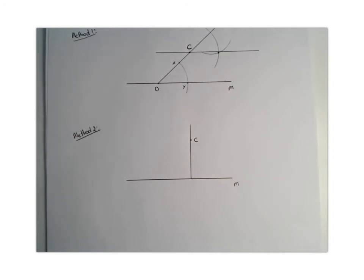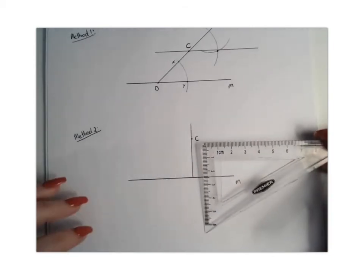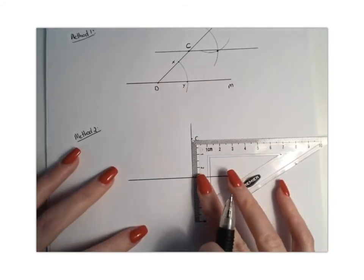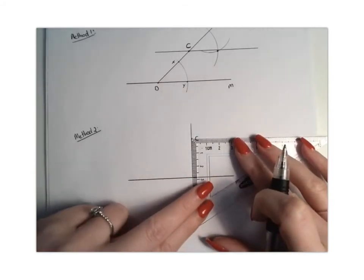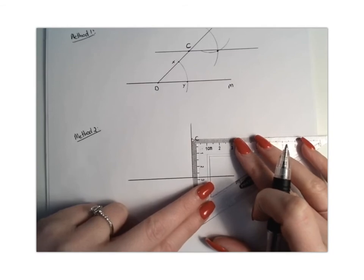Then we're going to line up one side of the right angle of our set square at point C. So basically, we're going to turn it the other way around, and this time we're going to use this line to line it up, with our 90-degree line, like so.